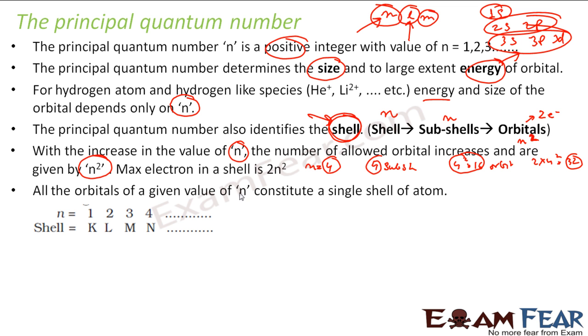All the orbitals of a given value of n constitute a single shell. For example, n equals 1, shell name is K; n equals 2, shell name is L; n equals 3, shell name is M.